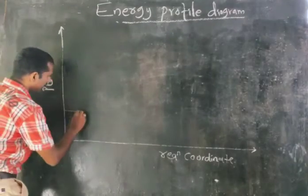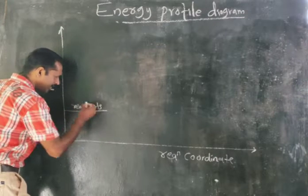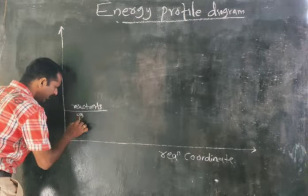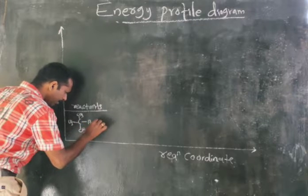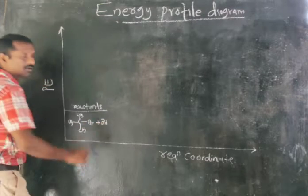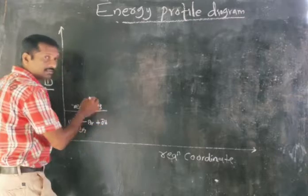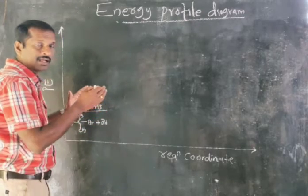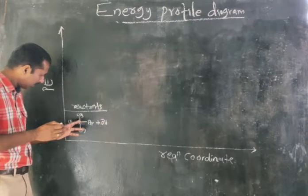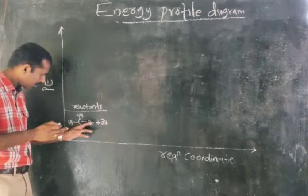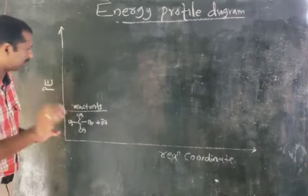Look carefully at the reactants on the diagram. Our reactants are C(CH3)3Br plus OH minus — OH minus is our nucleophile and C(CH3)3Br is our substrate molecule. In the first step, the slow cleavage of the C–X bond, or C–Br bond, occurs heterolytically.